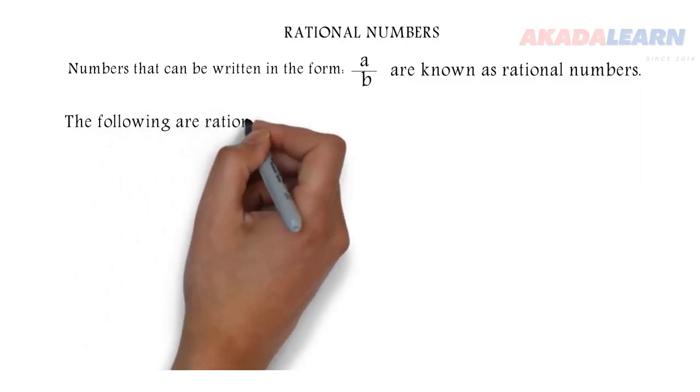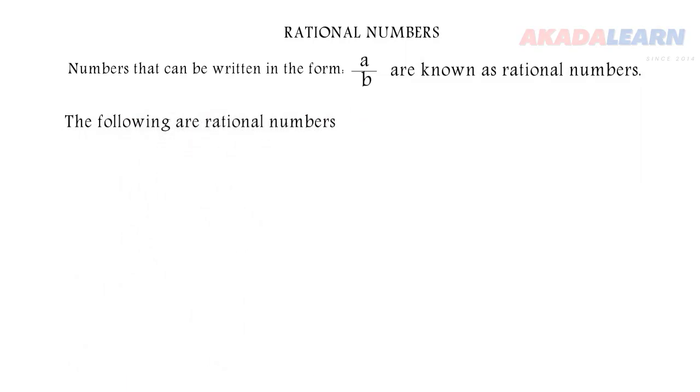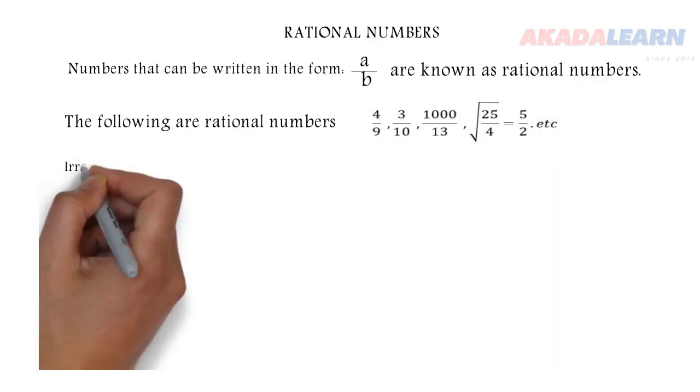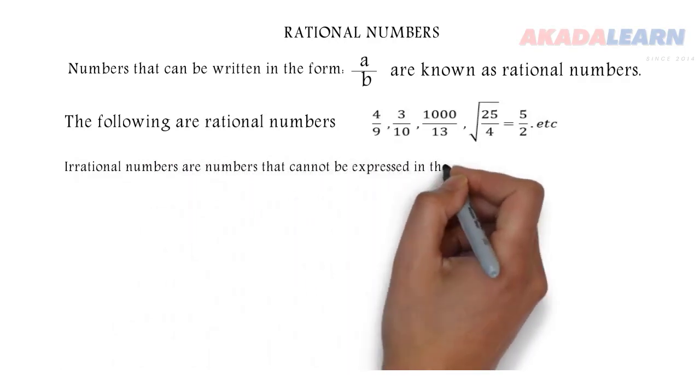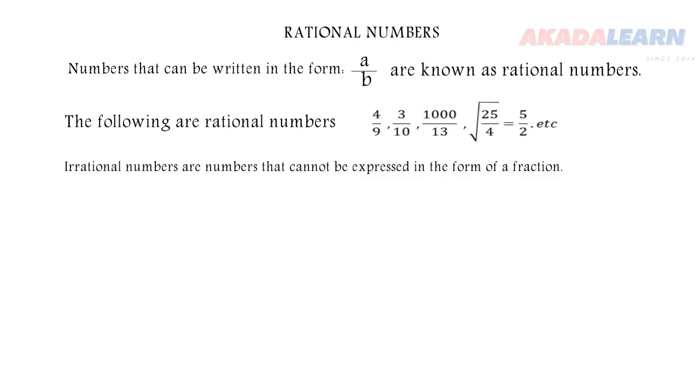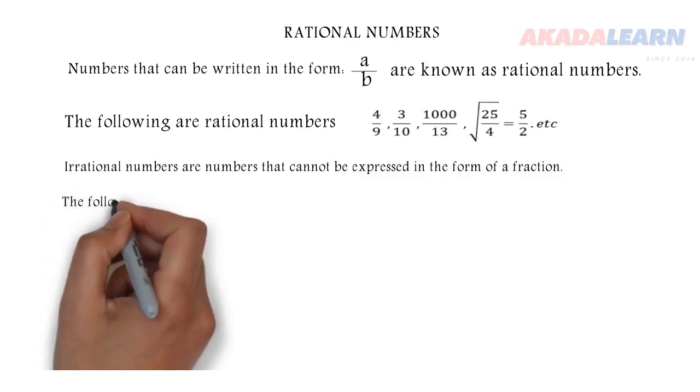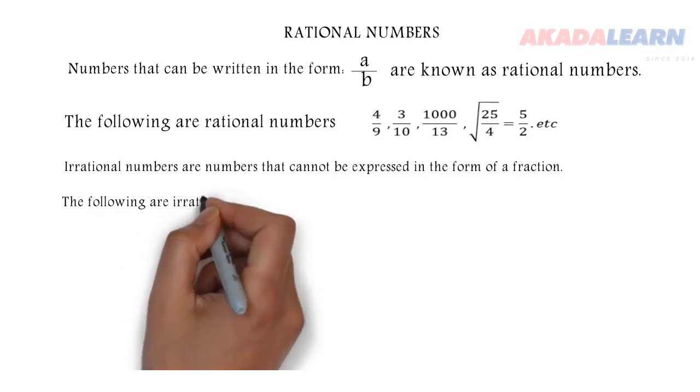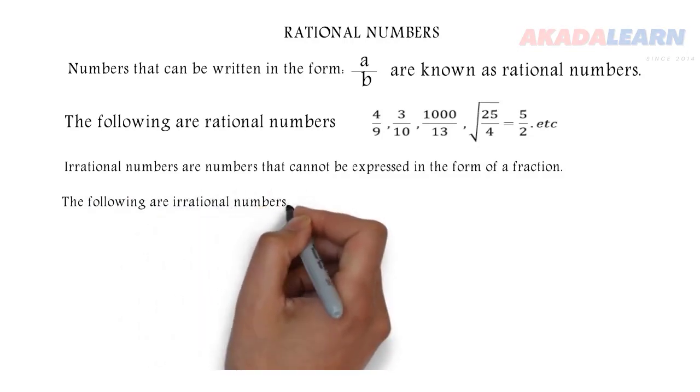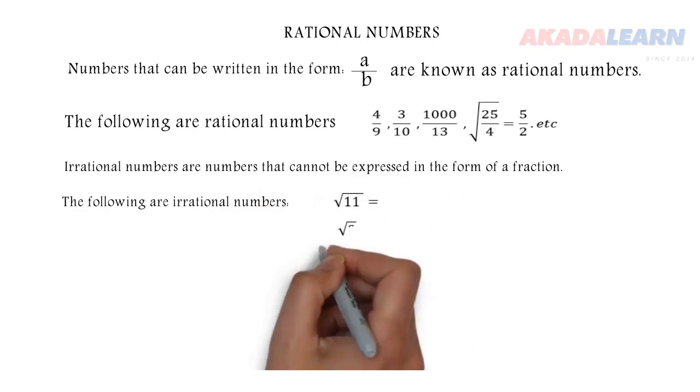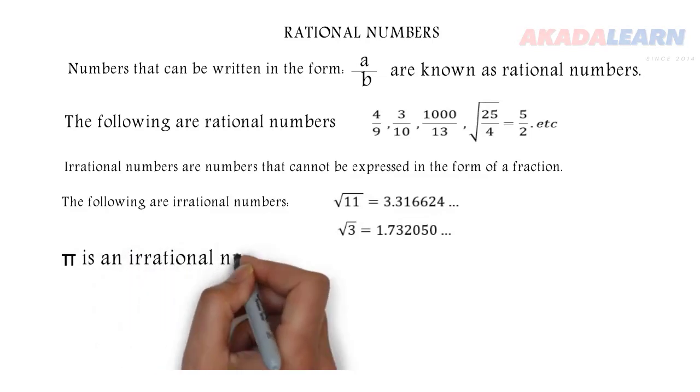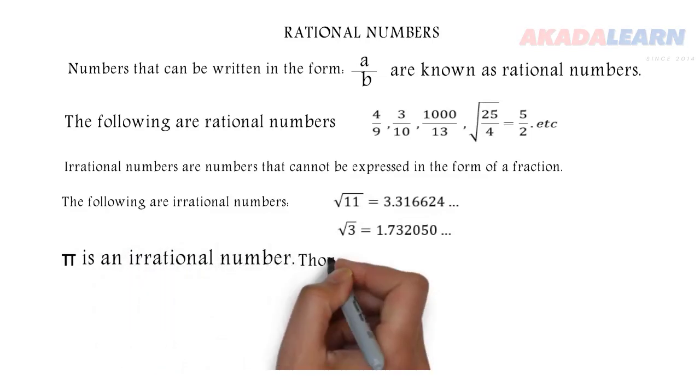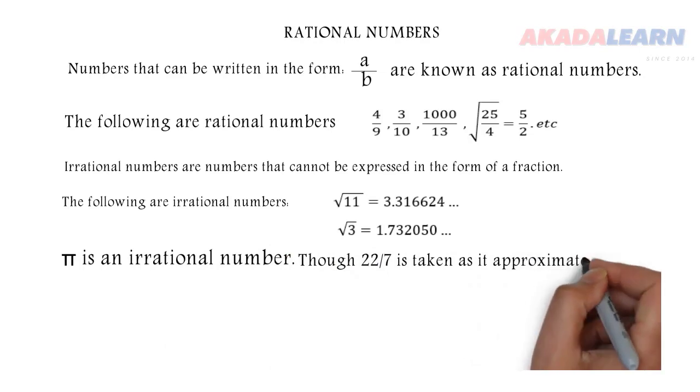So let's see some examples of rational numbers. They are right there for us to see. Now let's go to irrational numbers. So when we say a number is irrational, it means that number cannot be written in form of a fraction. Also let's see some examples of irrational numbers. We have them right there, those are just a few. Now pi is an irrational number though we use 22 over 7 as an approximate value of pi. Now let's proceed.